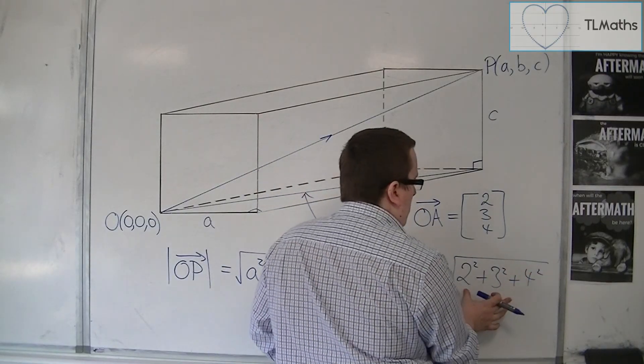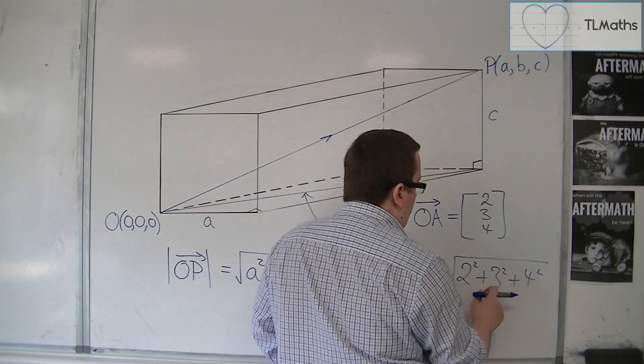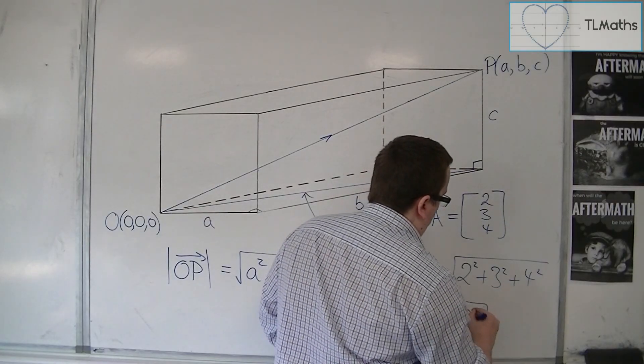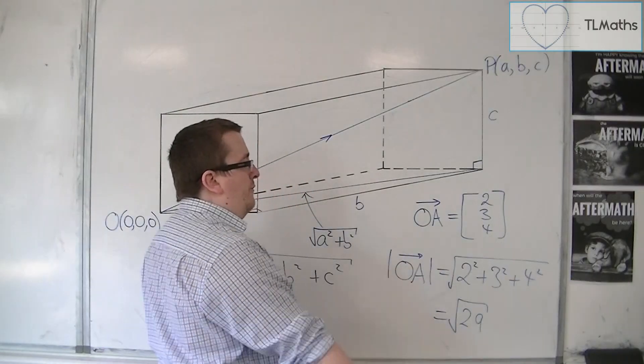So that gives us 29, so this is the square root of 29. That is the length of that vector.